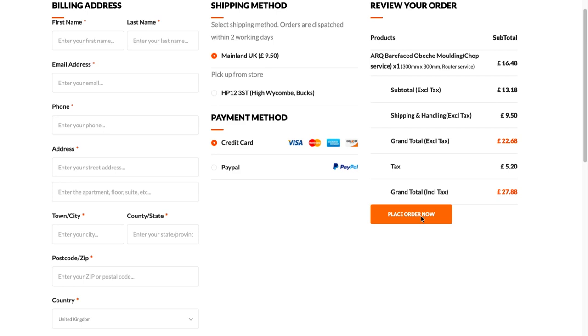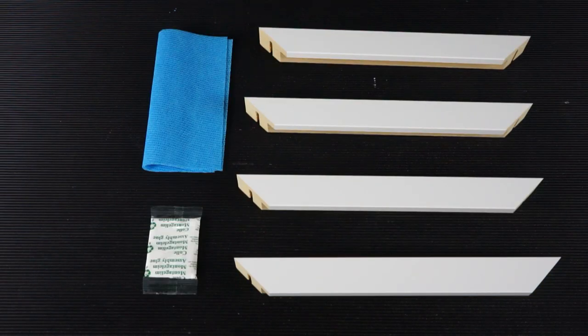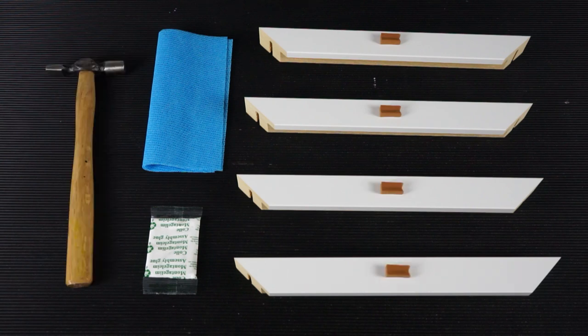Once your order has been delivered you will see that in the box you are given four lengths of molding, a microfiber cloth, a sachet of glue, and four inserts. The only other tool you will need is a hammer.